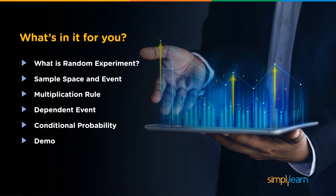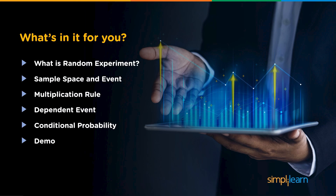We will start by talking about random experiments and then move on to events and sample space. Then we will try to understand the multiplication rule with the help of an example. After that, we will learn about dependent events and the multiplication rule associated with them, and we will learn about conditional probability with the help of an example. So, let's get started.